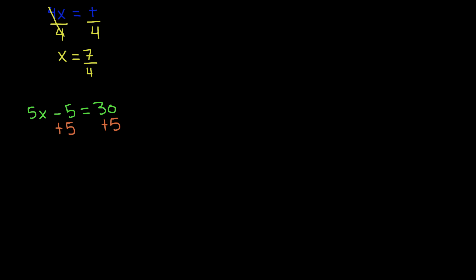So negative 5 and positive 5 cancel each other out, and so we are left with 5x is equal to 30 plus 5, which is 35.